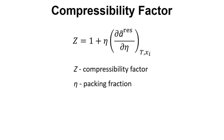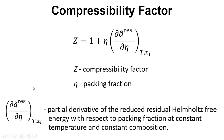We can calculate some properties for a system based on the reduced residual Helmholtz free energy. The compressibility factor Z is given by: Z equals 1 plus eta times the partial derivative of A-tilde-res with respect to eta at fixed temperature and composition. Here eta is the packing fraction — a term that comes up in the SAFT equations. So this is the partial derivative of the reduced residual Helmholtz free energy with respect to packing fraction.